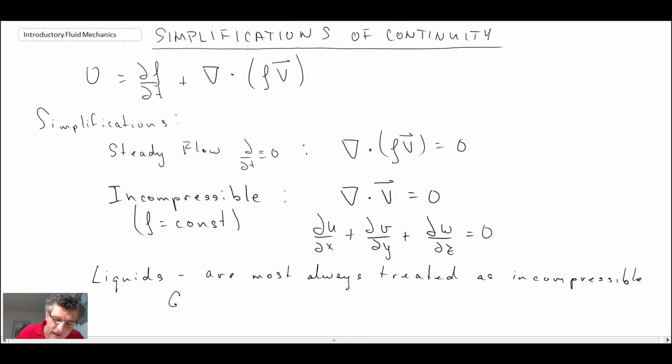And in the cases of gases, they're incompressible for velocities less than a Mach number of 0.3. And Mach number is defined as the local flow speed divided by the speed of sound.